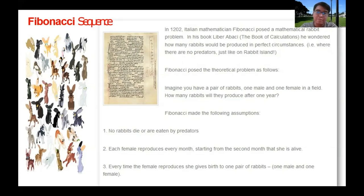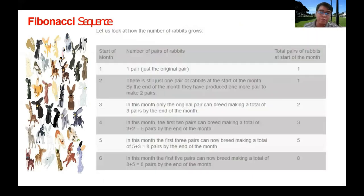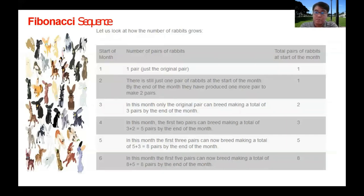Fibonacci made the following assumptions: first, no rabbits die or are eaten by predators; second, each female reproduces every month starting from the second month that she is alive; and every time the female reproduces, she gives birth to one pair of rabbits — one male and one female. At the start, there is just one pair of rabbits, still incapable of having offspring.